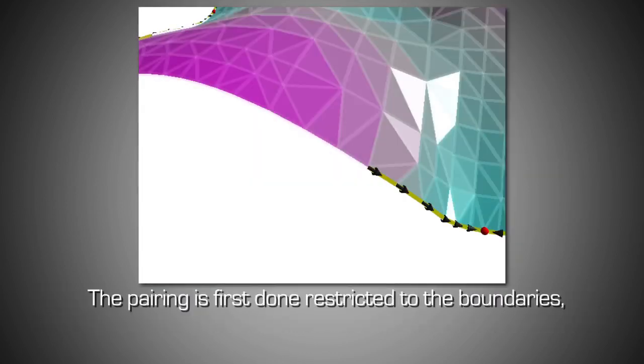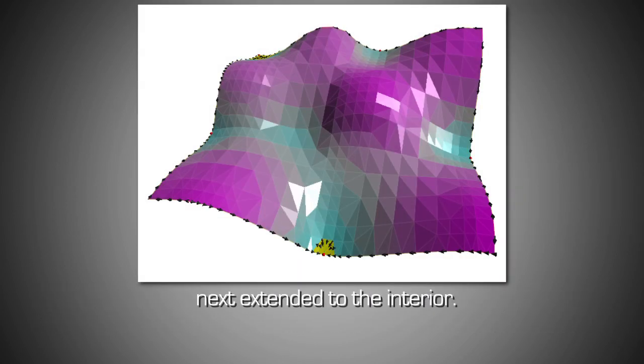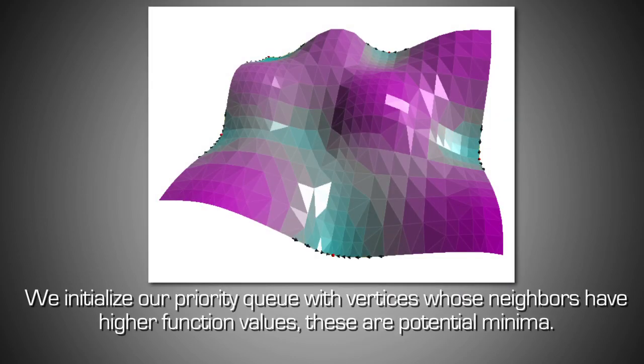The pairing is first done restricted to the boundaries, next extended to the interior. We initialize our priority queue with vertices whose neighbors have higher function values. These are potential minima.